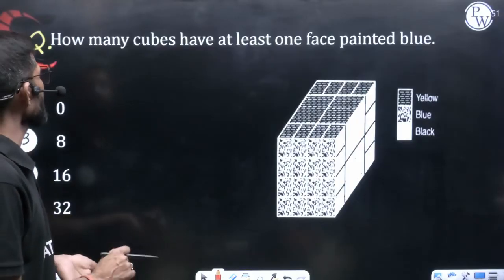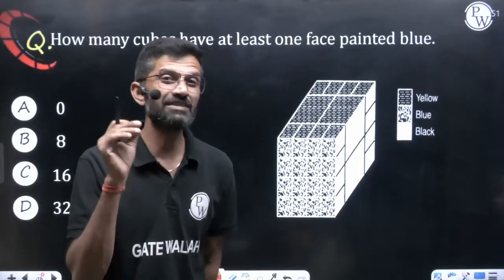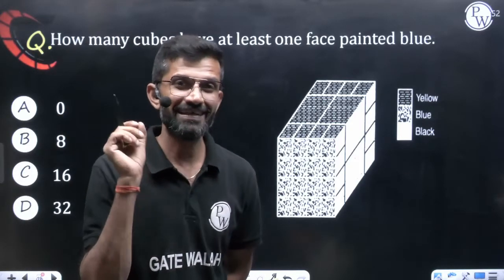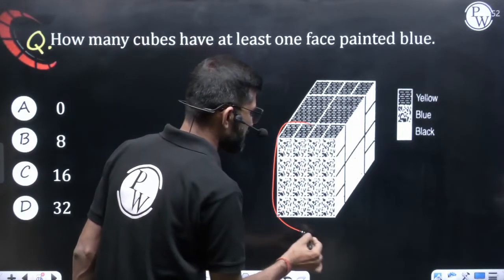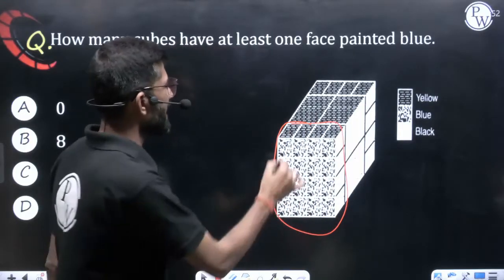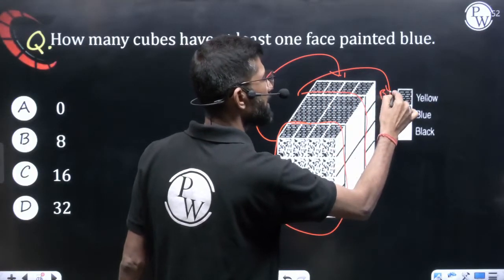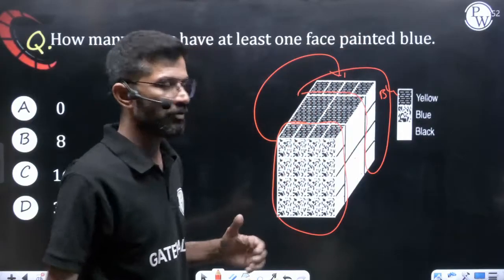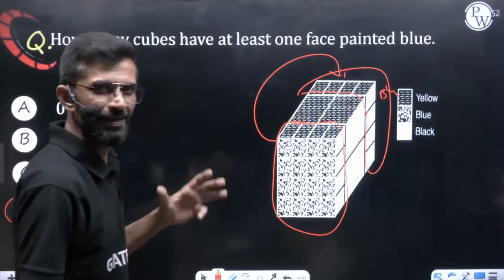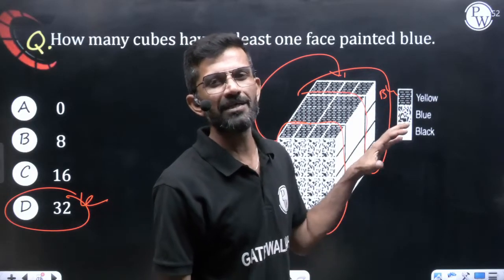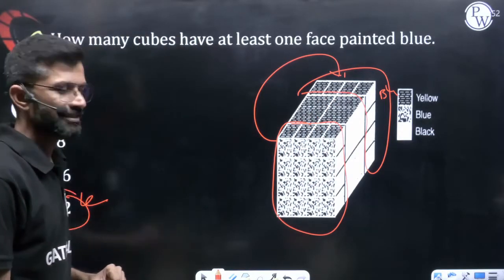Question 1: How many cubes have at least one face painted blue? Since no bigger cube has blue paint and blue is on front and back, only the smaller cubes have blue faces: 16 on the front and 16 on the back, giving 32 as the answer. Question 2: How many cubes have only one face painted? In the front layer, these 4 smaller cubes have only one face painted because the remaining portions are inside, and similarly 4 on the back — total 8.